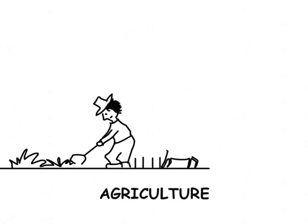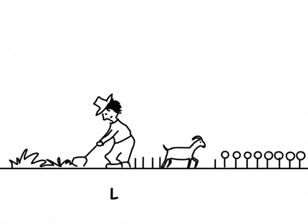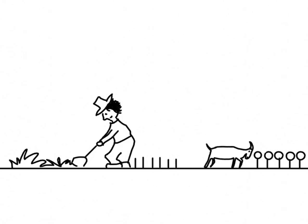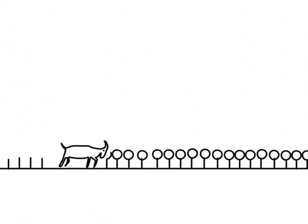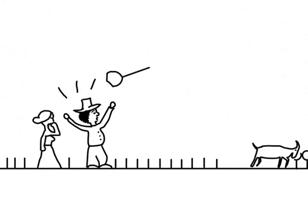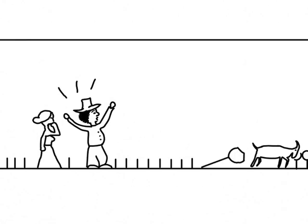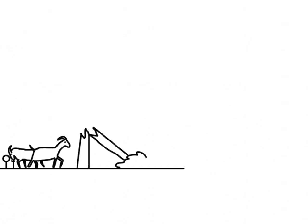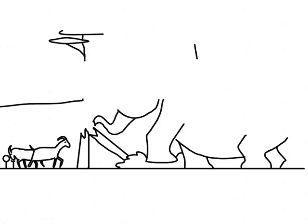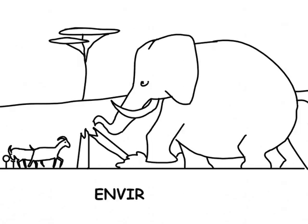A change in one of the parts of the ecosystem can have an unexpected impact on a different part of the ecosystem and in different places. There are therefore trade-offs in how we balance the competing needs of our ecosystem between people, animals and the environment.